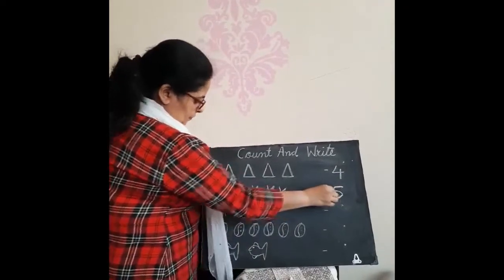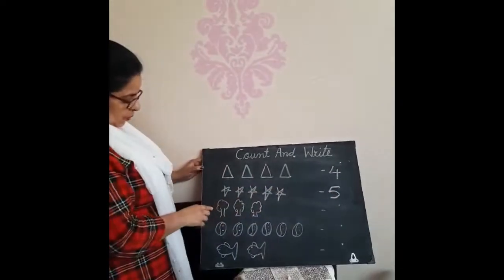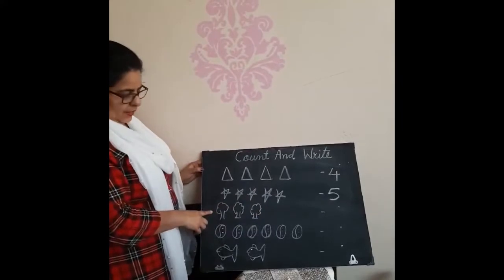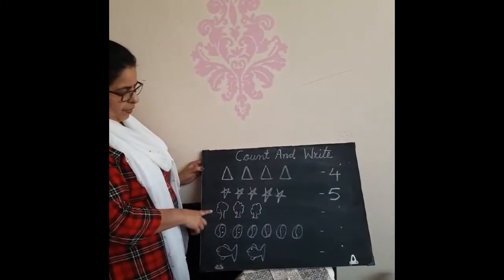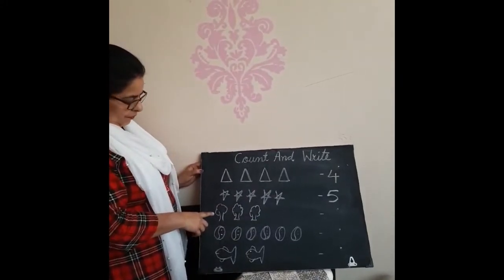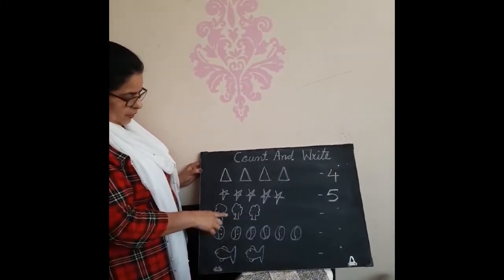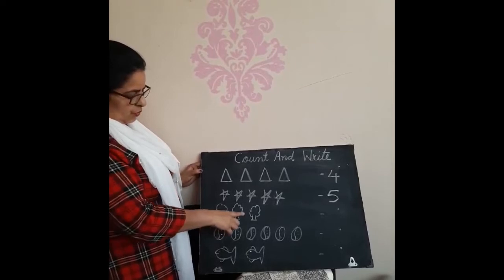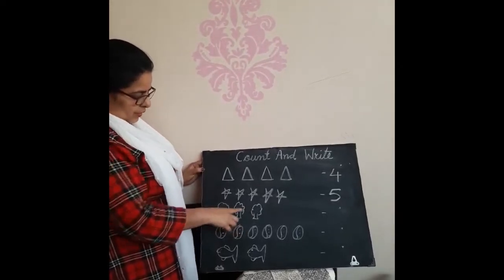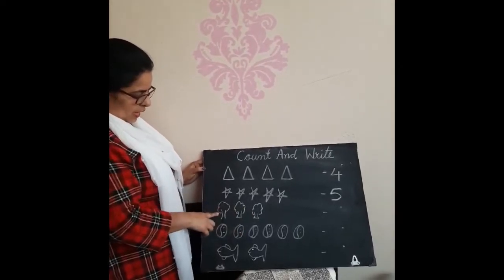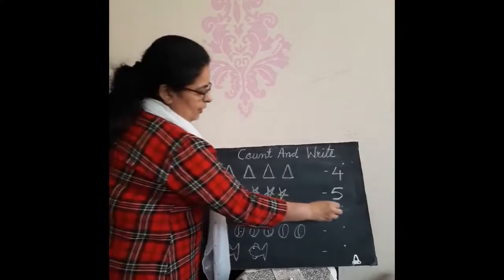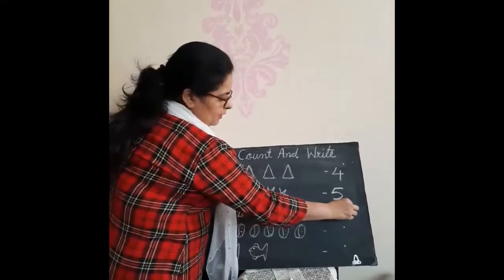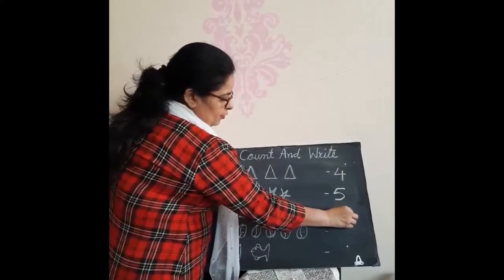Then write down here. 5. Now what are these? These are trees. Now count them. 1, 2, 3. Now write down here. 3.